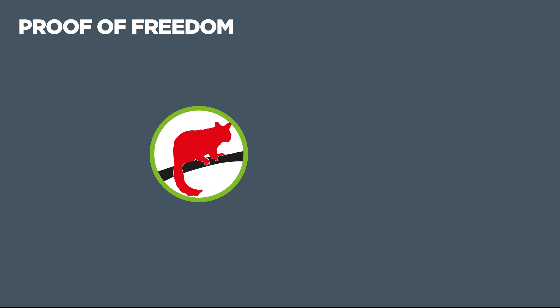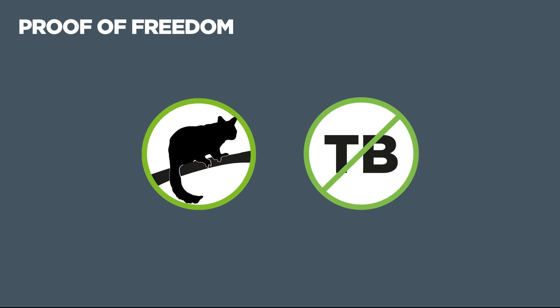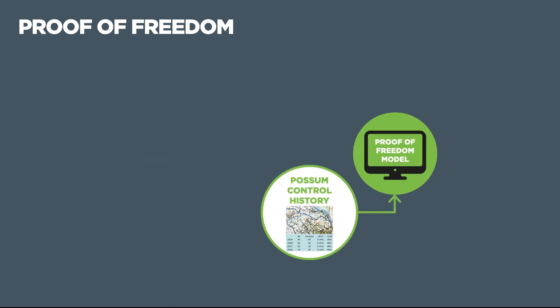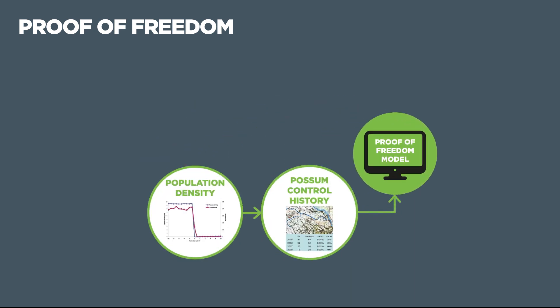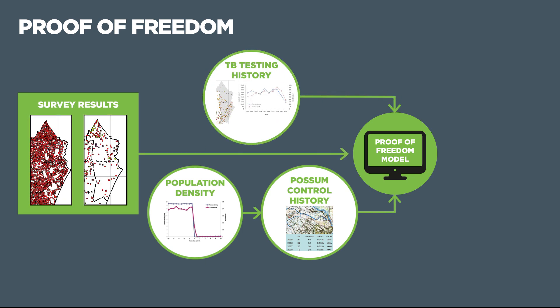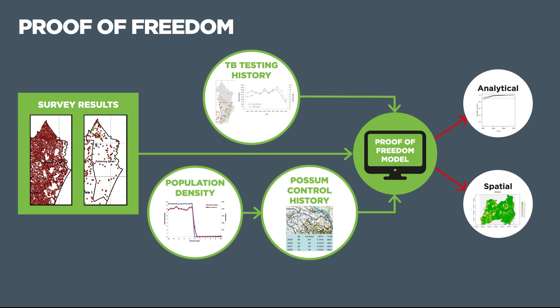Once we are confident that TB is absent in possums, proof is required to declare areas TB free. The Proof of Freedom model considers possum control history, population density, TB testing history, and survey results. The model guides decisions on what action to take next — continue possum control and surveillance activities, or stop.